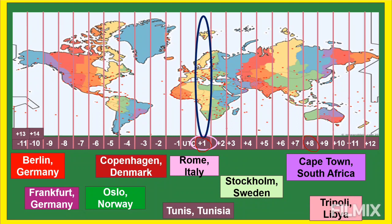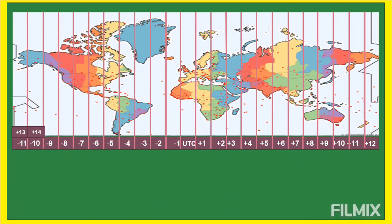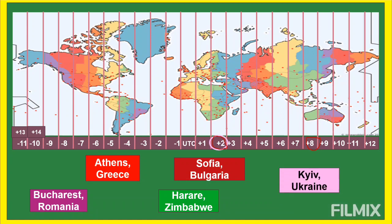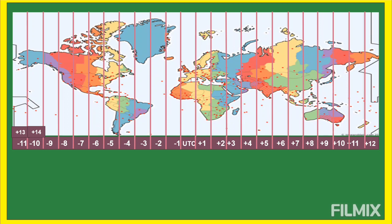Next is GMT+2, or UTC+2. These countries are two hours ahead of UTC. Comparing to Philippine time at GMT+8, the Philippines is six hours ahead on standard time, or five hours ahead when these countries observe Daylight Saving Time. These places include Athens (Greece), Bucharest (Romania), Sofia (Bulgaria), Harare (Zimbabwe), Kyiv (Ukraine), and Egypt, plus many other places under GMT+2 that I didn't mention.